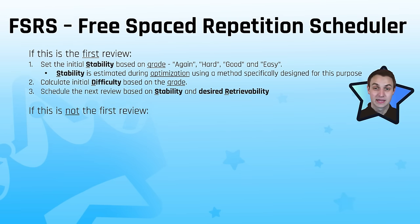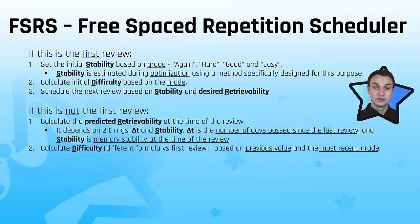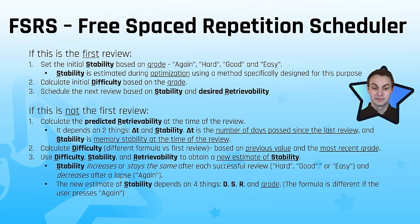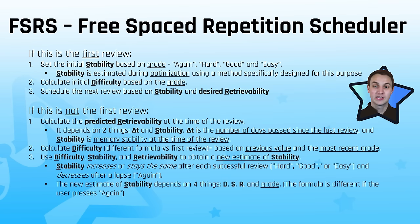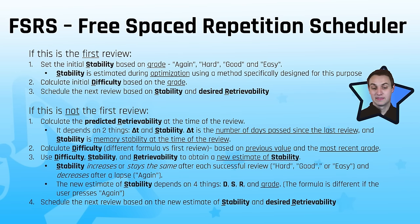For non-first reviews, FSRS calculates the projected retrievability based on time elapsed and stability — this works even if you review too early, too late, or the card is overdue. It then calculates a new difficulty and estimates a new stability. If something's more difficult, stability grows slower. Stability stays the same or increases as long as you're getting things correct, but decreases if you forget or hit again. Importantly, unlike Anki where hitting hard decreases ease, with FSRS stability stays the same or increases on hard — so if you've hit hard a lot, FSRS may not work well for you.